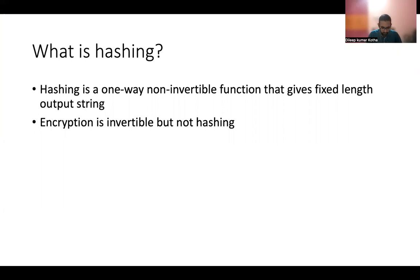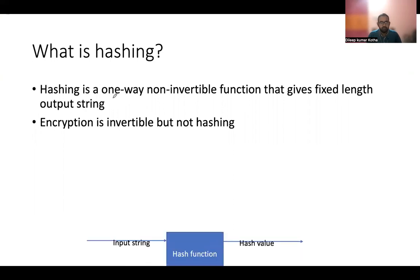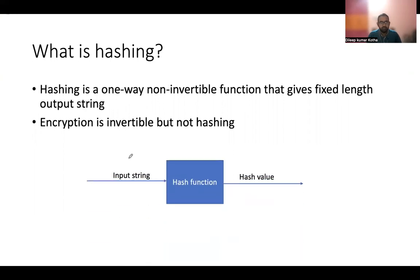Let's look word by word at what this means. Hashing is one-way — it means given an input string, we get an output hash value. But given a hash value, we cannot get the input string back.